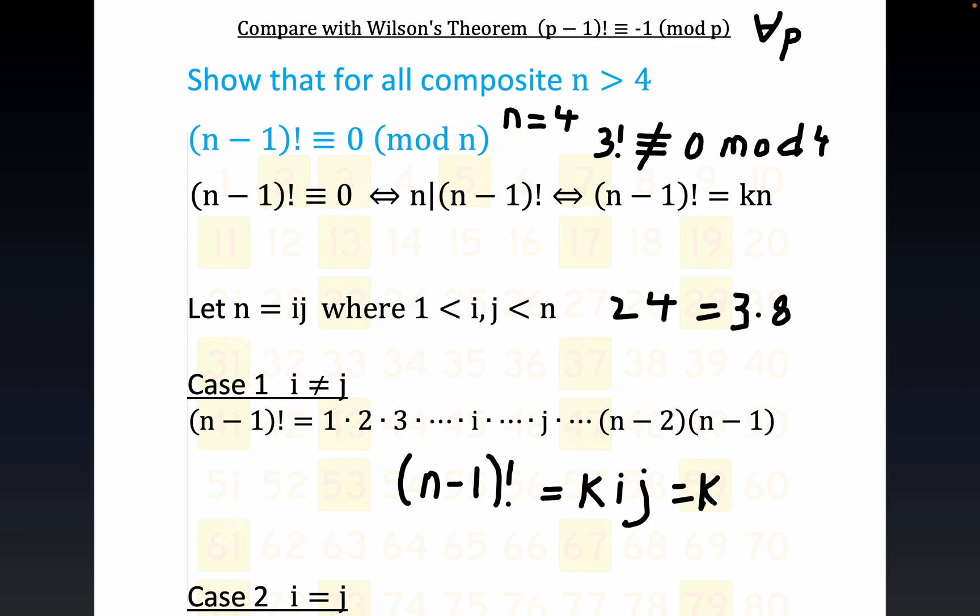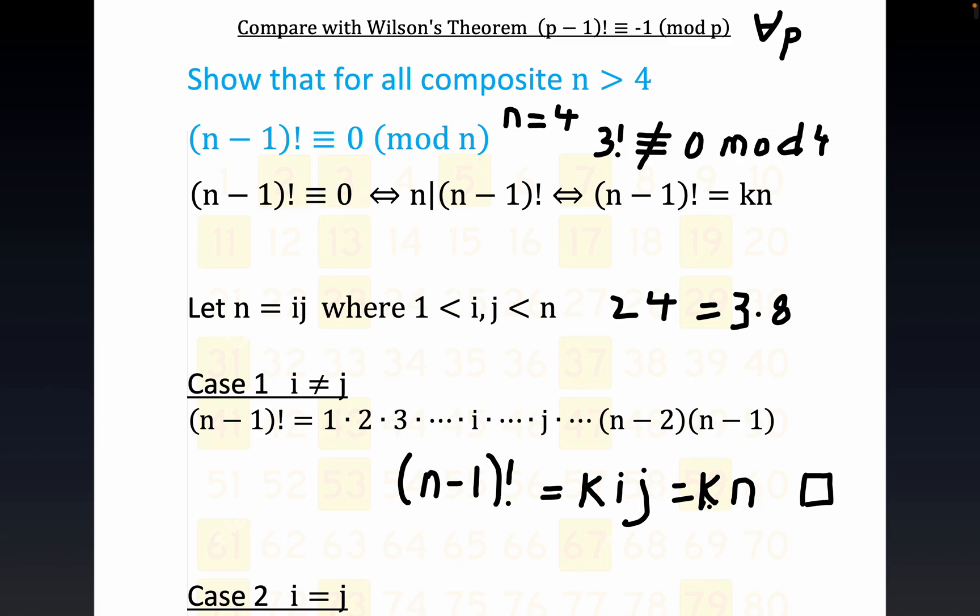But that's equal to K times n. So you see this is a more convenient way to write the congruence directly as the product of the two divisors. You see Case 1 is trivial - we can check off on this, we can put a box here. And the K that you would get would be all the other factors in this expansion of (n-1)! other than i and j. You know, K would be composed of 1, 2, 3, all the way to n-2, n-1. So we've proved it very easily for Case 1.